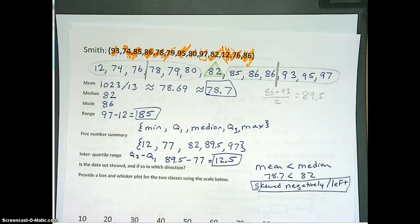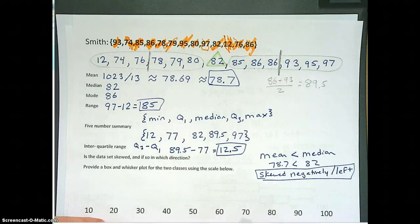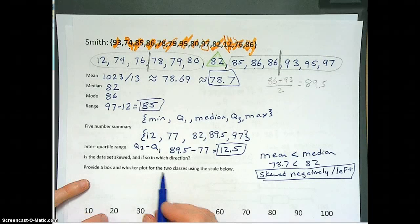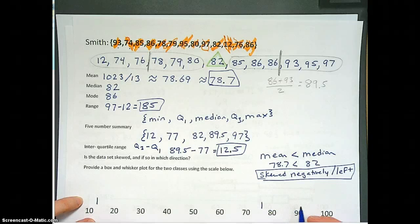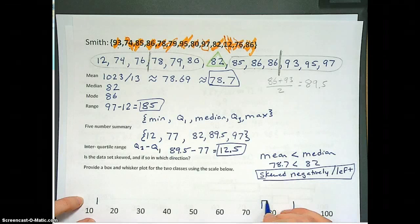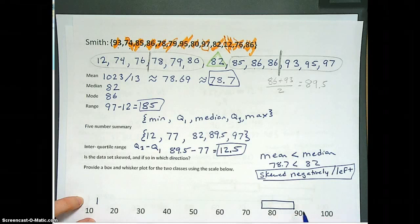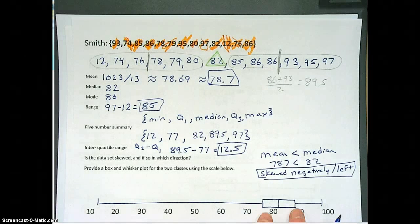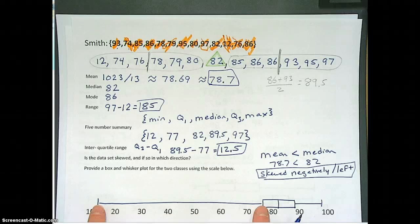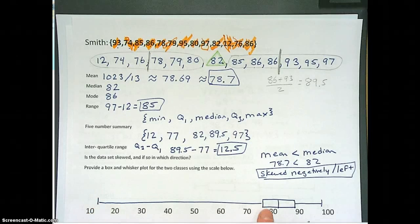All right. Now we're going to actually draw the box and whisker plot. Here we go. We've got the 12 is our minimum. The box starts at a 77. The box ends at an 89.5, which is pretty much there. So there's our beauteous box. The median was an 82, so right there. The high score was a 97. We're going to go down to that 12. Here's our box and whisker plot. It shows that 50% of the grades were in here. 25% were here. Let's go ahead and pause the video now and you guys do Mrs. Jones' class and then we'll compare.